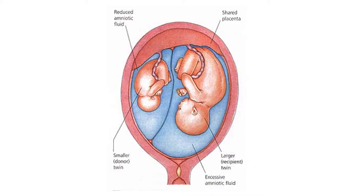As a result, the recipient twin will have too much surrounding amniotic fluid while the donor will have little or none. The recipient twin and the excess fluid can press the donor twin against the wall of the uterus, which may make the mother uncomfortable and can even result in preterm labor or contractions.